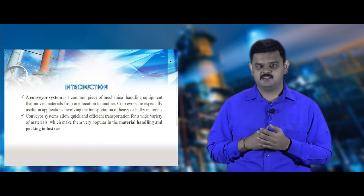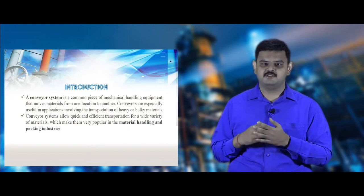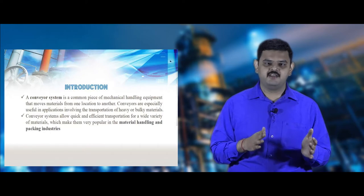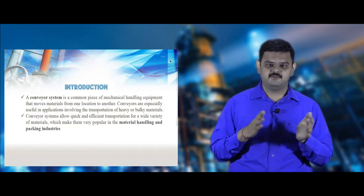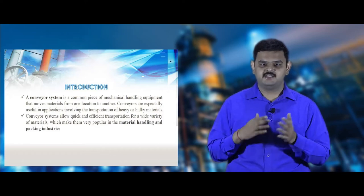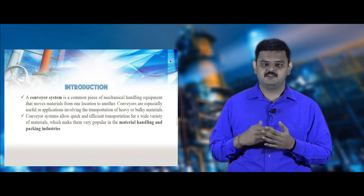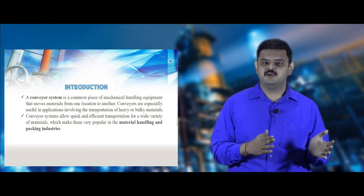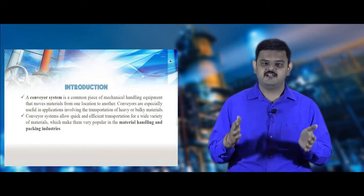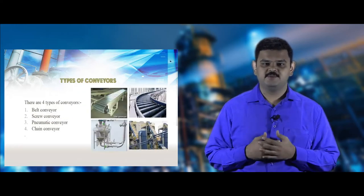Conveying systems are the most common systems used in mechanical material handling equipment. They use different methods such as chain conveyors, belt conveyors, and screw conveyors to transfer materials from one place to another. They are very easy to handle and their sizes can be extended or reduced.